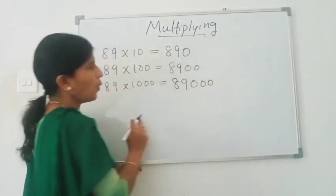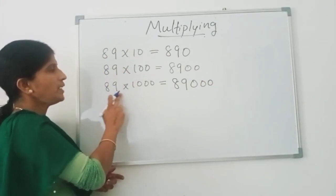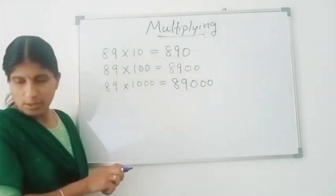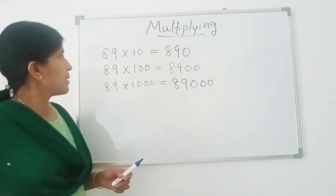Okay, so, 89 times 1000 is equal to 89000. We can try with some other numbers.